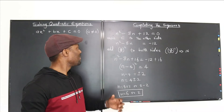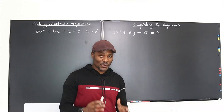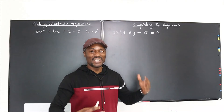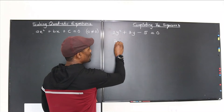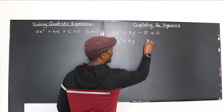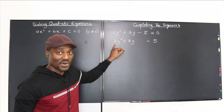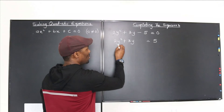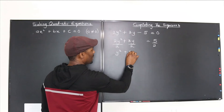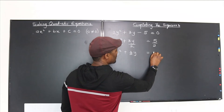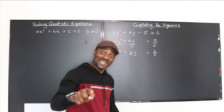Now we'll move to examples that require fractions and more involved answers. In this third example — 2y squared plus 3y minus 5 — I chose it because you can factor it and check your answer. First, move the constant to the other side: 2y squared plus 3y equals 5. Then divide through by 2 to make the leading coefficient 1.